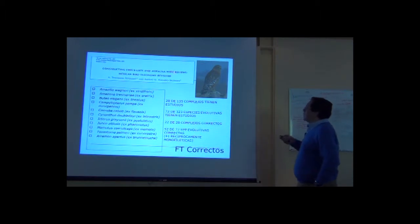In summary, when we did this first pass with extra information, we know that of the 135 species that we analyzed the first time, 28 of those will have particular studies. Of the 323 evolutionary species, 72 have studies. Of 28 complexes that we split, 22 were correct. Of the 72 evolutionary species that we defined, 52 were correct with new evidence, and 41 of those were reciprocally monophyletic in terms of genetics.